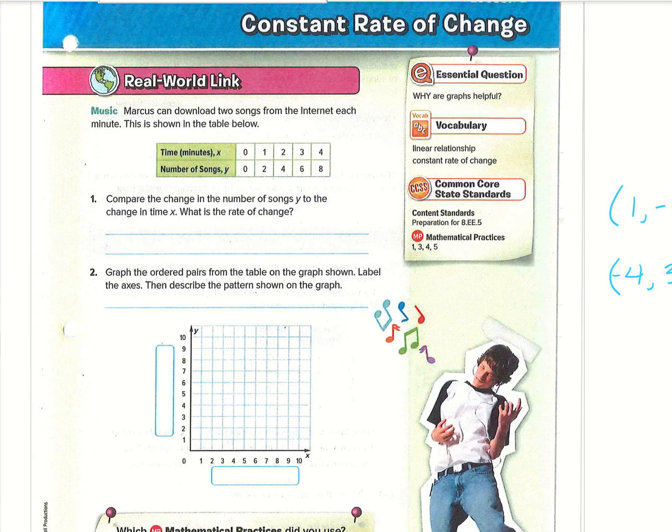We'll go ahead and get started on this stuff that is actually 3.1. For this real-world link, Marcus can download two songs from the internet each minute. This is shown in the table below. Compare the change in the number of songs, y, to the change in time, x. What is the rate of change?